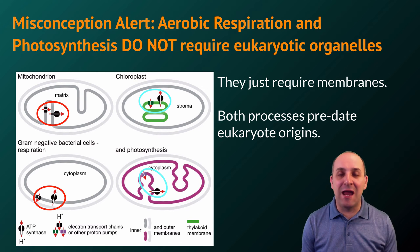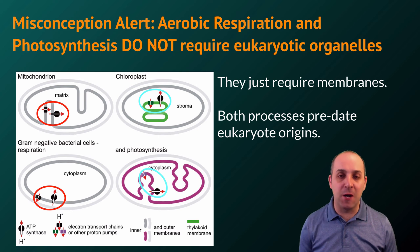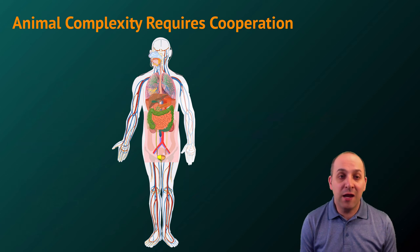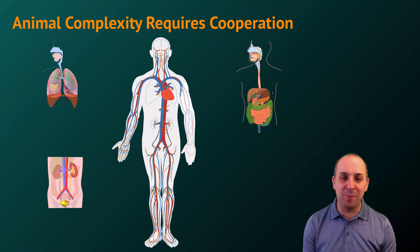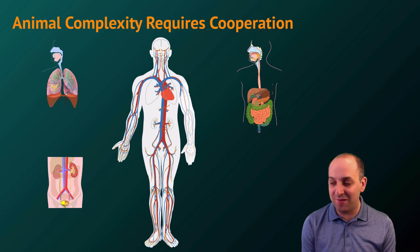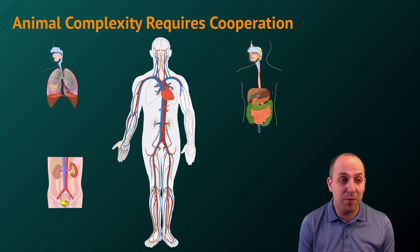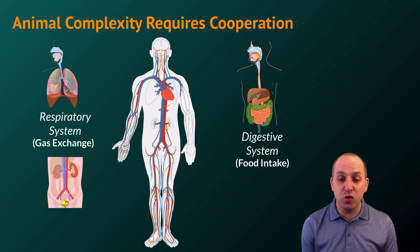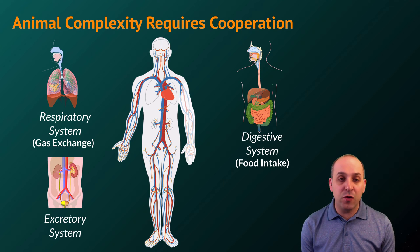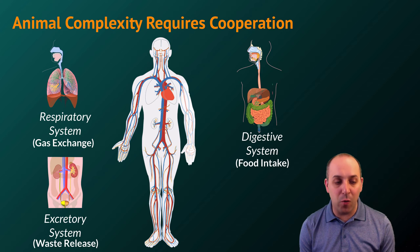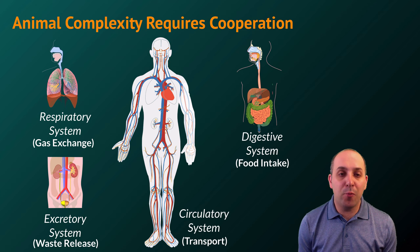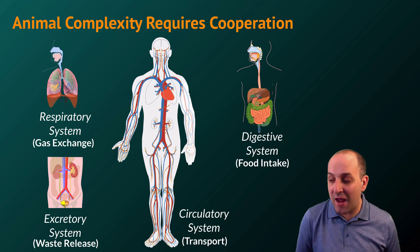Let's jump up a few levels of complexity and look at examples of cooperation in multicellular organisms, starting with animals. The complexity of animals is entirely a function of cooperation. A human can exist because of the cooperation between the different body systems that comprise that human being — specifically the respiratory system where gas exchange occurs, the digestive system where nutrients and food are taken into the body, the excretory system that gets rid of metabolic wastes, and the circulatory system that transports all of these materials to all the cells in the body. Without the cooperation of all these systems working together, animals could not exist.